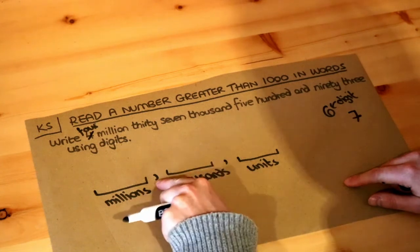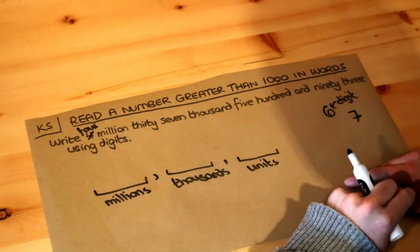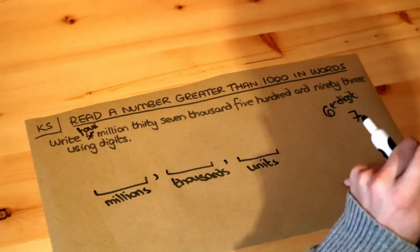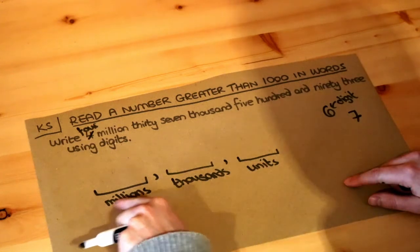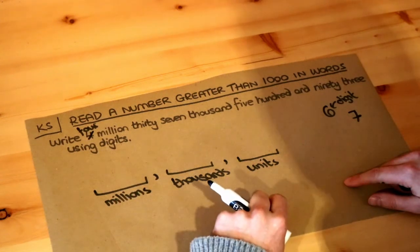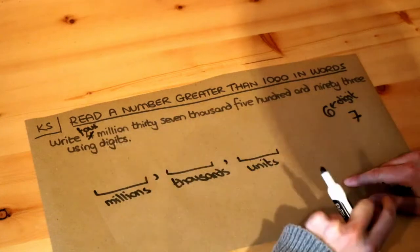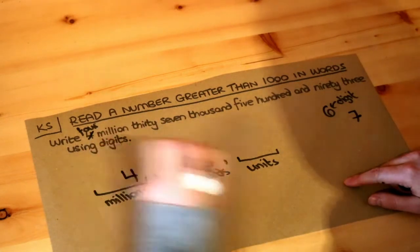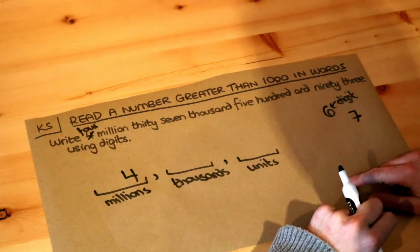We use the comma to separate the different sections of the number. Now let's see how many we have of each. First, how many millions? We're told we have four million, so I'm going to put a four there, and then we're going to have a comma.